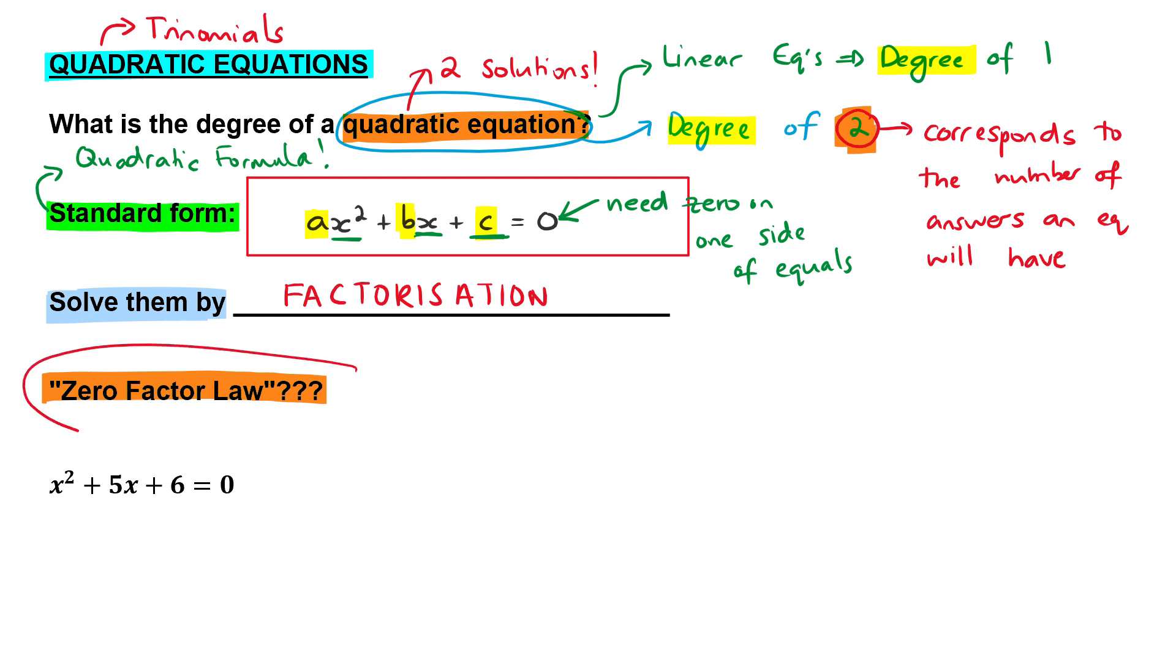That then brings us to this idea of the zero factor law here. Now what the zero factor law means is basically this. And you can also think of it another name for it as the zero product law. Now a product means we multiply. So it's basically saying the zero multiplication law. And how would something like that work?